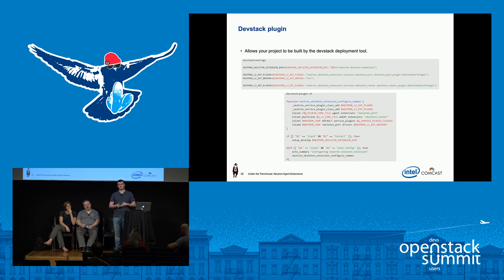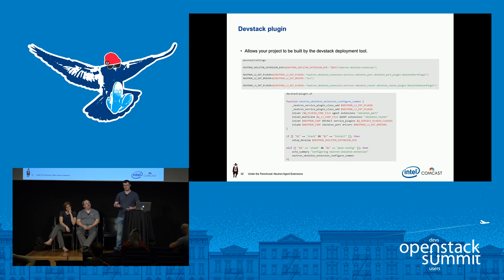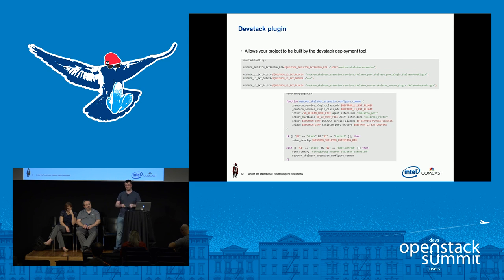To create a DevStack plugin for an out-of-tree project, create a devstack directory with a settings file and a plugin.sh file. The settings file assigns variables that can be overridden in your local.conf when stacking. The plugin.sh file is a script that runs at different stages of DevStack as it passes different arguments — for example, when installing, it puts the project in the neutron skeleton extension directory, and in post-config it writes the extension names onto all the agent extension fields.